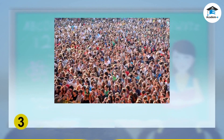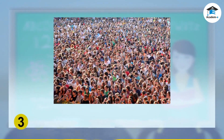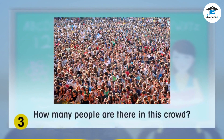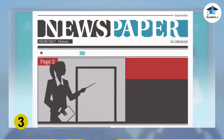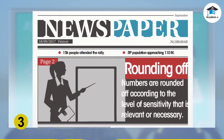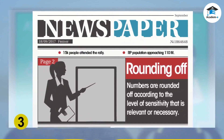In most situations, numbers don't need to be reported up to the ones, tens, or even the hundreds digit. For example, about how many people are gathered in this rally? When we calculate, we round off numbers according to the level of sensitivity that is relevant or necessary.